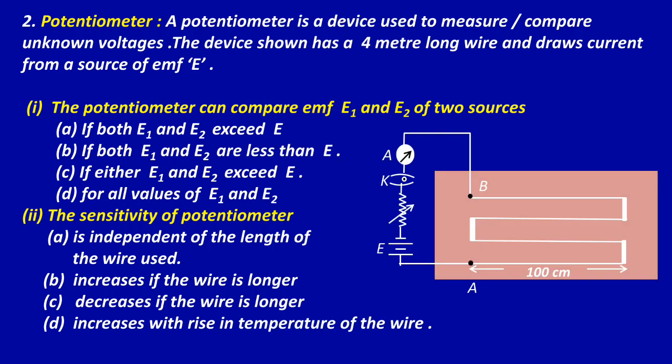Now another case study based on potentiometer. A potentiometer is a device used to measure or compare unknown voltages. The device shown has a 4-meter long wire and draws a current from a source of EMF E. Question 1: The potentiometer can compare EMF E1 and E2 of two sources — Option B: if both E1 and E2 are less than E. That is the correct answer.